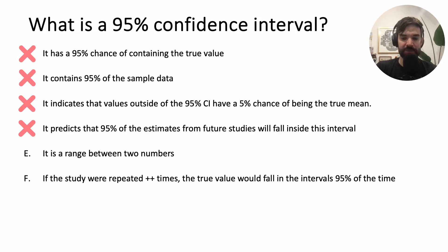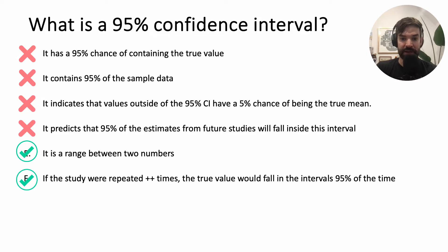It is a range between two numbers — true. If the study were repeated many times, the true value would fall within the 95% confidence intervals 95% of the time — true.